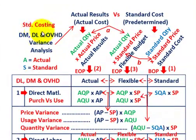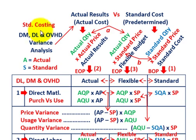What we're going to be going over here is variance analysis for direct materials, direct labor, and overhead, and we're going to look at it in terms of standard costing.